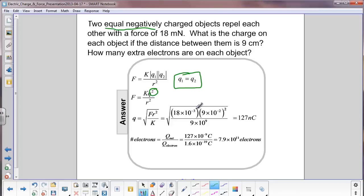We put the force in. We change millinewtons to 10 to the minus 3. The distance, we change centimeters to 10 to the minus 2 meters. And then here's Coulomb's constant.